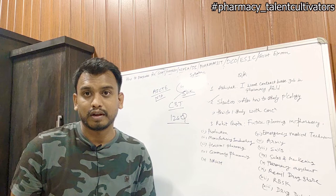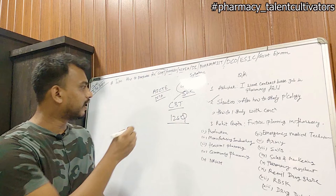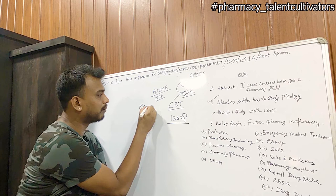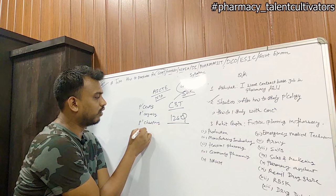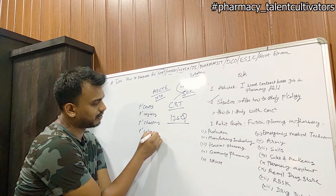If you see the exam pattern, there are core subjects you have to know about. The first core subject is Pharmaceutics, the second is Pharmacognosy, the third is Pharmaceutical Chemistry, and the fourth is Pharmacology. These are the pure stream subjects in pharmacy.